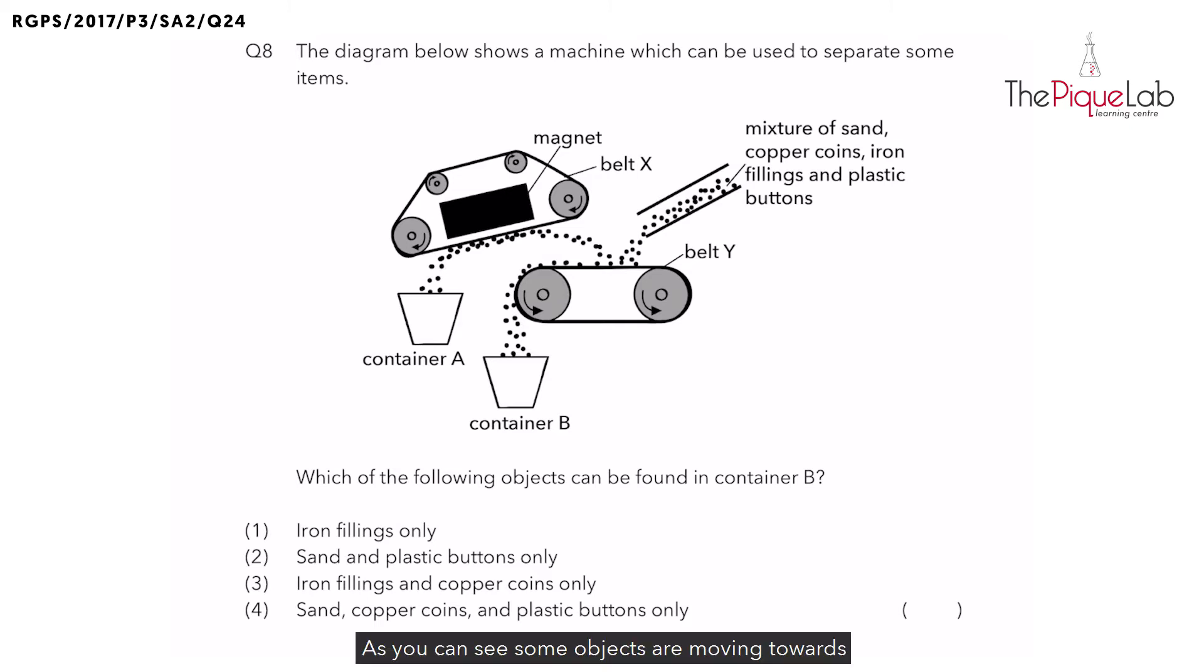As you can see, some objects are moving towards belt X. What is so special about belt X? Yes, there is a magnet in belt X, which means the magnet will attract all the magnetic materials. So the magnet is going to attract all the magnetic materials. Why are some objects moving towards the magnet in belt X? It is because they are being attracted by the magnet, and therefore what can we conclude about those materials?